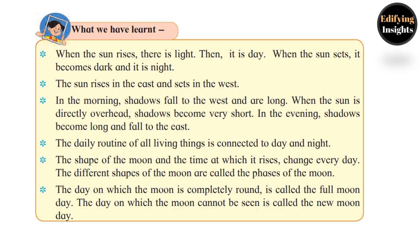Now let us revise what we have learned in this lesson. When the sun rises there is light — then it is day. When the sun sets it becomes dark — and it is night. The sun rises in the east and sets in the west. In the morning, shadows fall to the west and are long. When the sun is directly overhead, shadows become very short. In the evening, shadows become long and fall to the east. The daily routine of all living things is connected to day and night. The shape of the moon and the time at which it rises change every day.